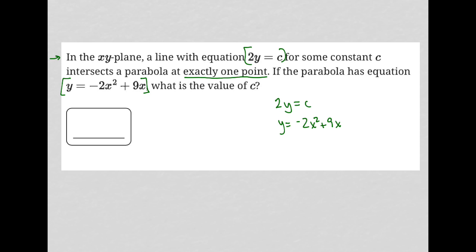I know that I can convert this 2y = c into y = ½c instead of c/2 (same thing, you could call it c/2 if you'd like). Then I can use substitution to replace this y down here with my ½c, so I'd have ½c = -2x² + 9x. I would then move this ½c over so I can have this all set equal to zero, so I'd have -2x² + 9x - ½c = 0.